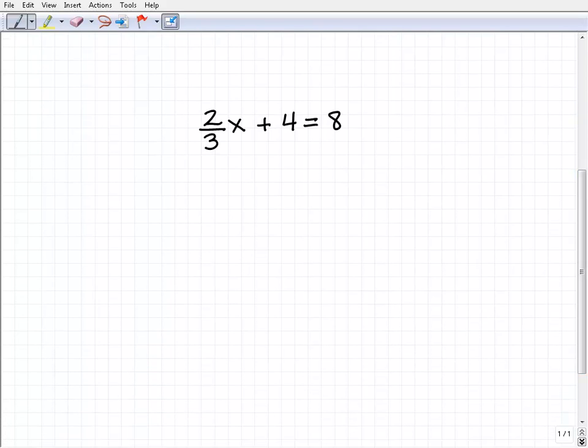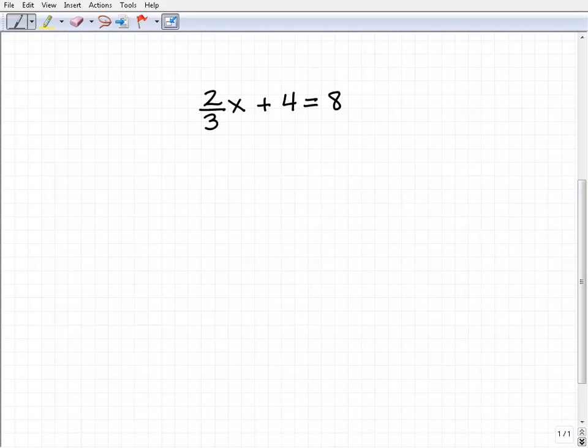So here it is, two-thirds x plus 4 equals 8. The first thing I'm going to do is subtract 4 from both sides of the equation. Now I've highlighted where I want to write that.